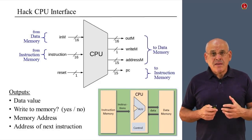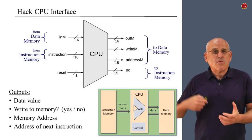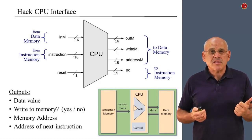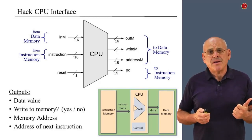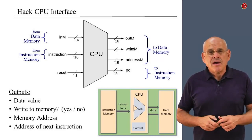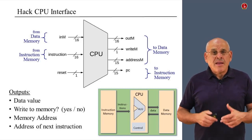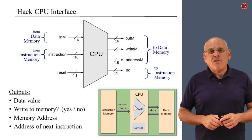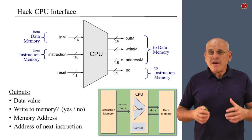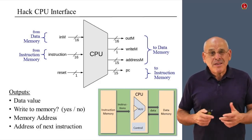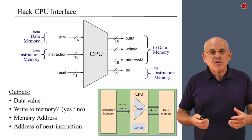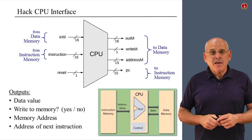On the right-hand side are the outputs. If the ALU wants to write something to data memory, it must specify three things: what to write (output called outM), where to write it (an address output), and a load bit that enables the data memory for write operations. In addition, there is one extremely important output called PC, which holds the address of the next instruction that has to be fetched and executed in the next cycle.